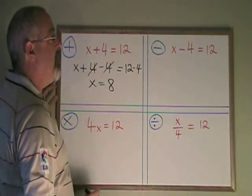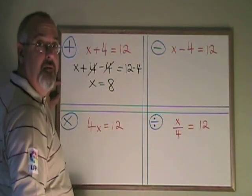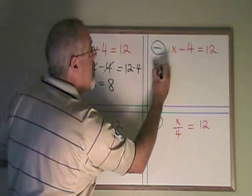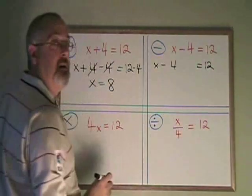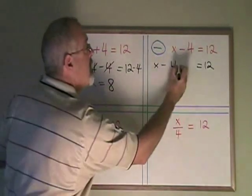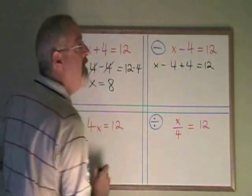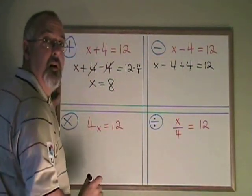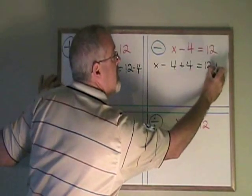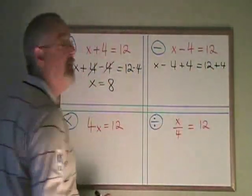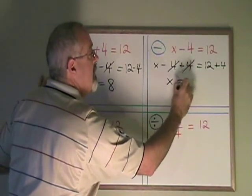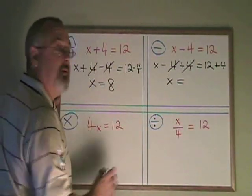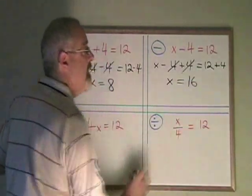Subtraction. Here my x is having a 4 subtracted from it. The opposite of subtraction is addition, so I add a 4 to that side. But what I do on one side, I have to do on the other, so I am also adding a 4 on the right side. These cancel. My x is isolated and is equal to 12 plus 4, which is 16. I have my answer.